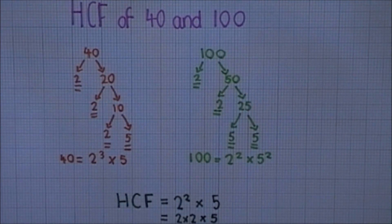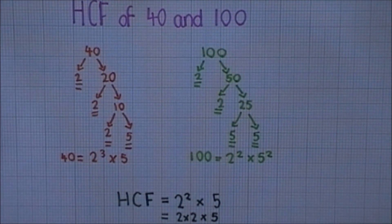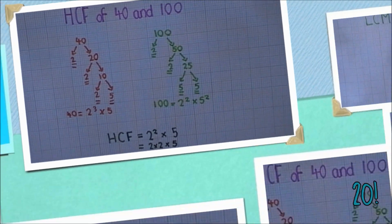Back to the example, if we multiply 2 to the power of 2 and 5 together, we get 20. Aha! The same answer as before.